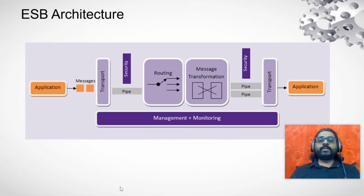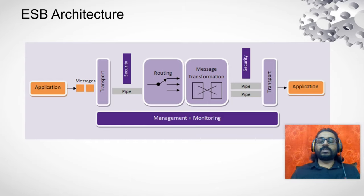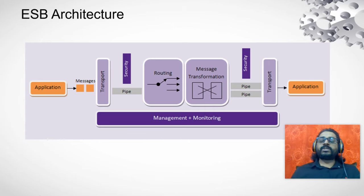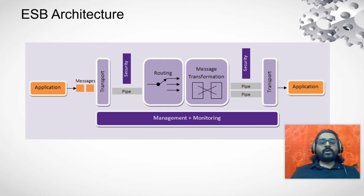After message transformation, it goes to the security layer again, which is the outbound security. In the outbound security, any security credentials that need to be passed to your southbound application will be taken care of. Then the transport layer manages the sender configuration like HTTP or HTTPS protocol, and the message reaches the actual application. It also allows us to manage and monitor all these things, which we will discuss in detail in upcoming videos.